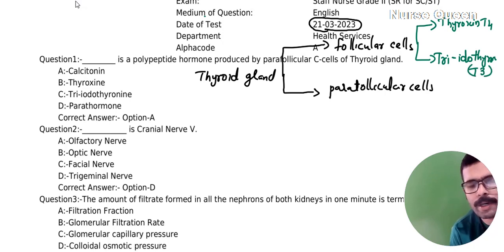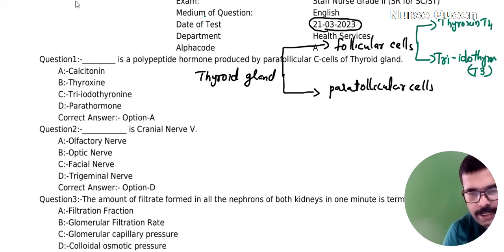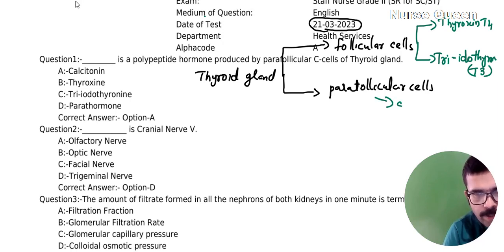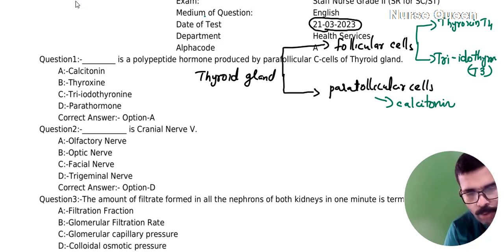T4 and T3 are secreted and produced by follicular cells of the thyroid gland. Para follicular cells synthesize and secrete calcitonin.